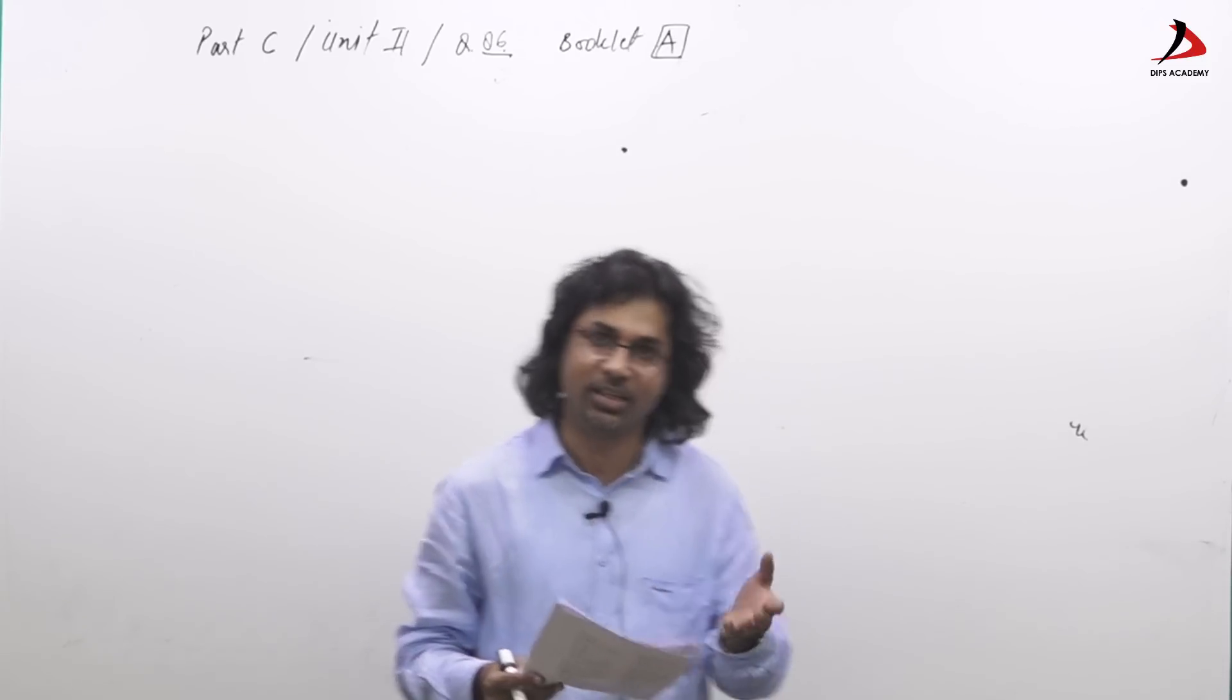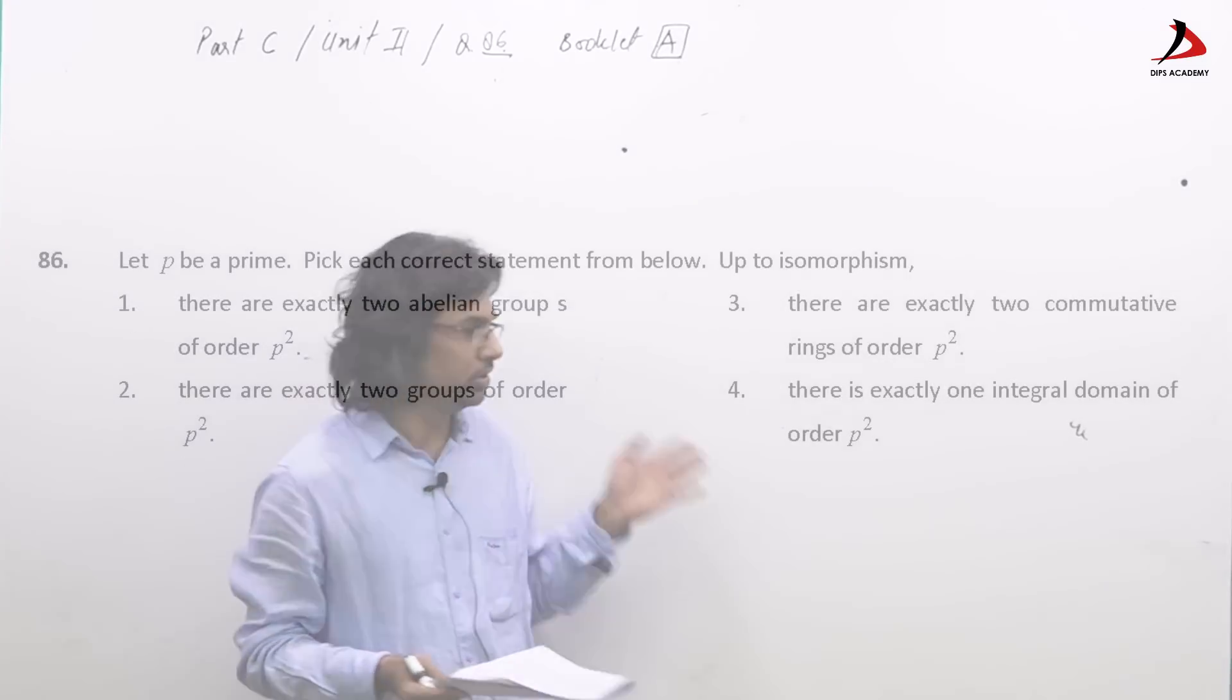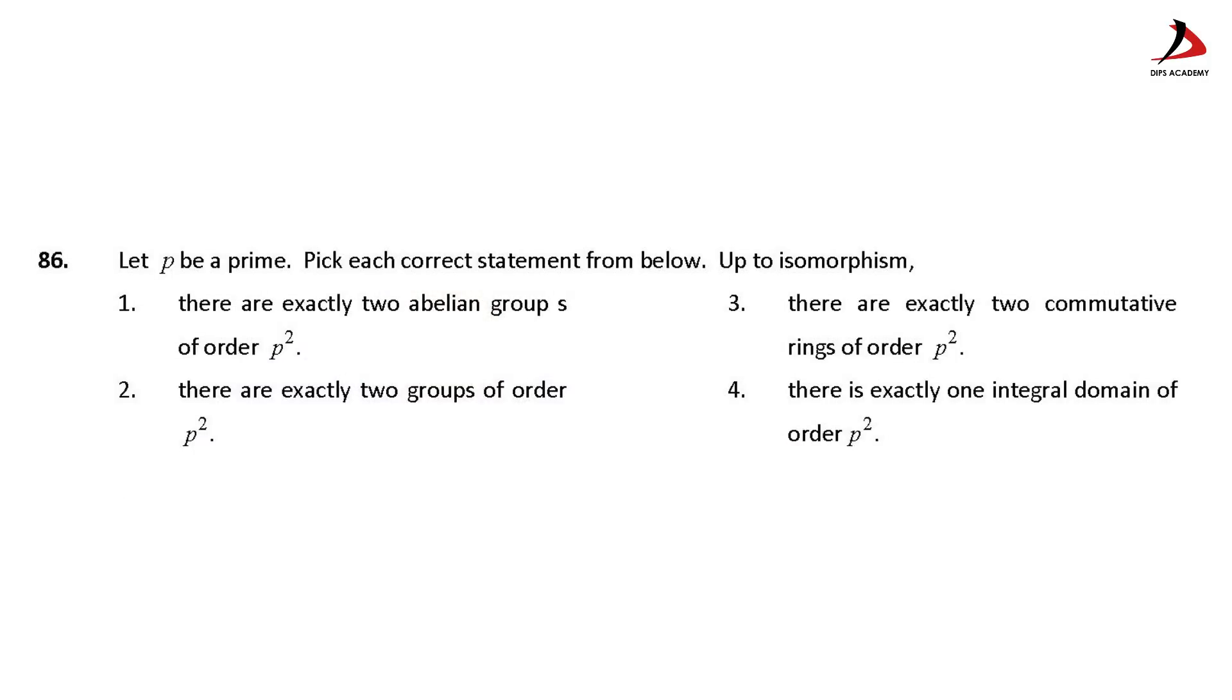Among these four options you can read this question from your booklet or you can see on screen as well. The first option: there are exactly two abelian groups of order P square.